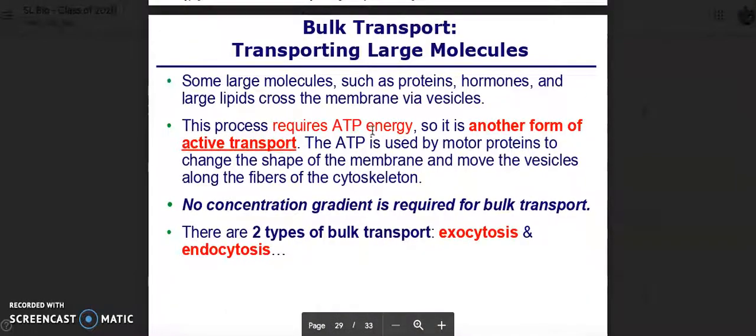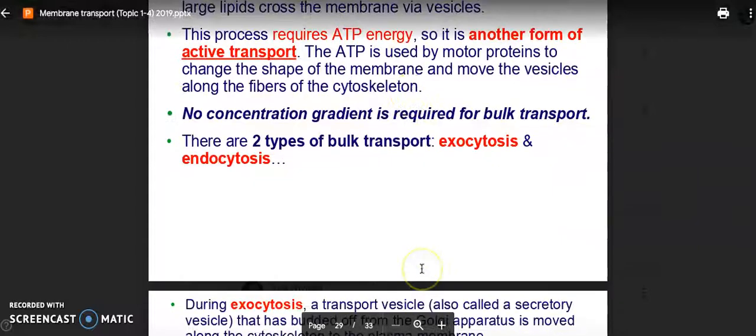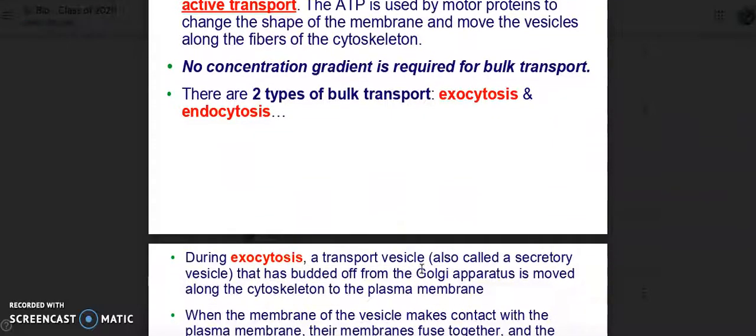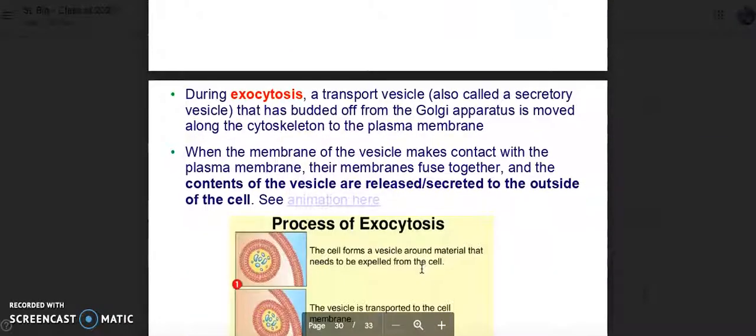Bulk transport. Some large molecules, such as proteins, hormones, and large lipids, cross the membrane via vesicles. This process requires ATP energy, so it is another form of active transport. The ATP is used by motor proteins to change the shape of the membrane to move vesicles along the fibers of the cytoskeleton. No concentration gradient is required for bulk transport, and there are two types of bulk transport: exocytosis and endocytosis.